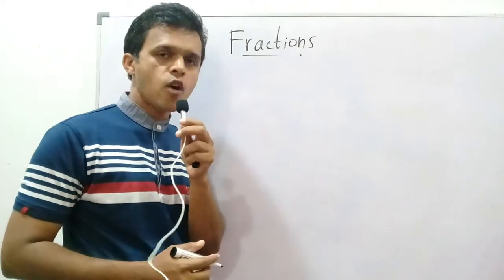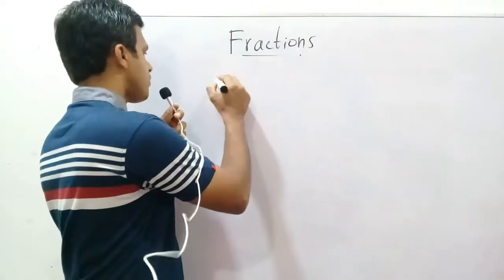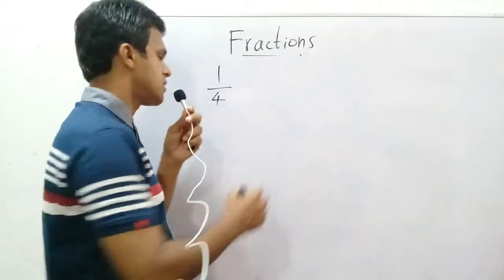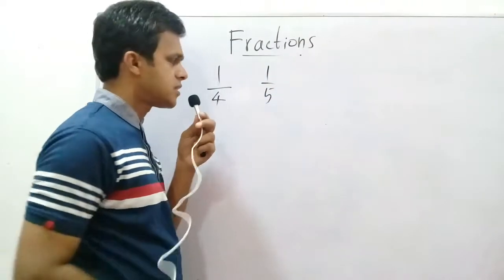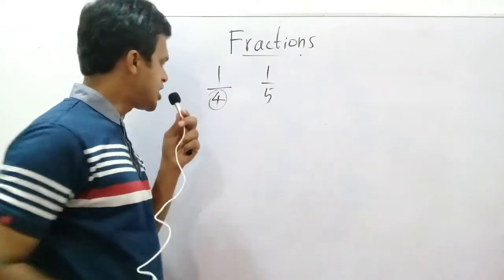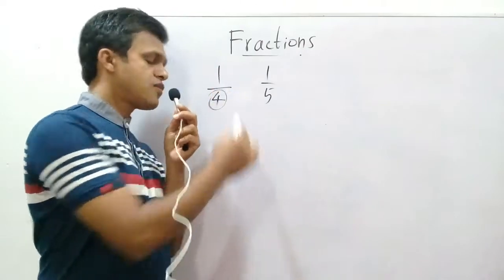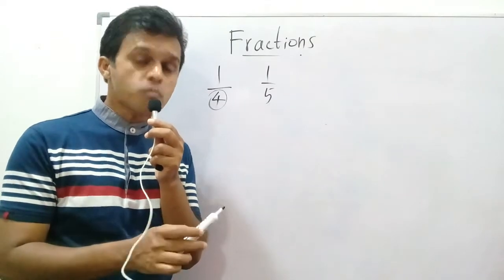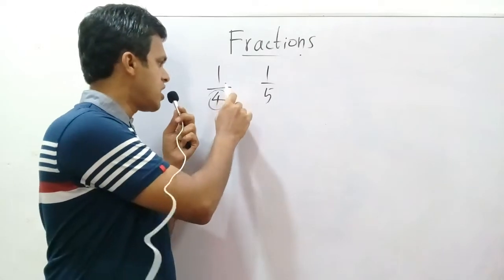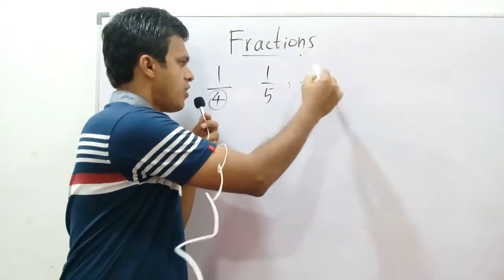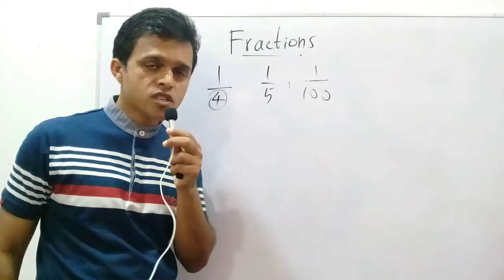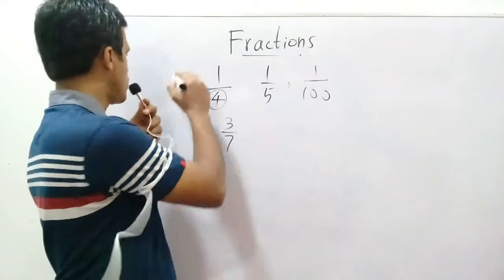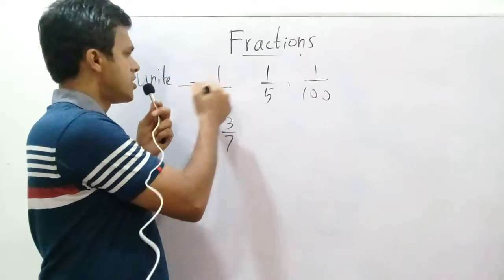What is a unit fraction? A unit fraction is one where the numerator is one. You can see here: one over something — one over 100, for example. These are unit fractions. What about three over seven? These are not unit fractions.